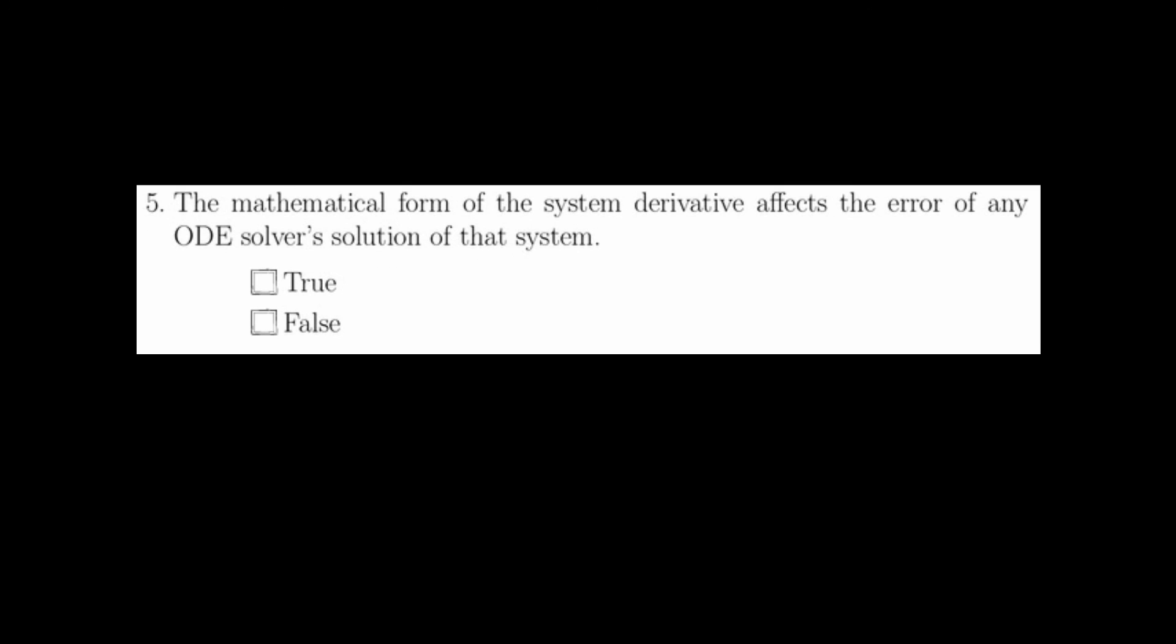Question 5 asks if the system's derivative affects the error of any ODE solver's solution to that system. This is also true. For example, consider the error for Forward Euler. You can see that the form of the system derivative plays into the error. While this error formula does not hold for any ODE solver, this general statement does hold true. The system's derivative does affect the error of any ODE solver's solution to a system.